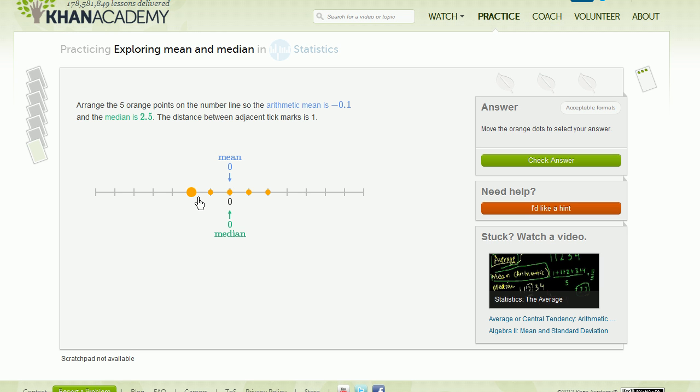So we're being asked to see an arithmetic mean of negative 0.1 and a median of 2.5. Those are very different numbers. So how can you take five points and say the central tendency is negative 0.1 and the central tendency is 2.5? And there's just different ways of measuring it. And sometimes one way is better than the other.